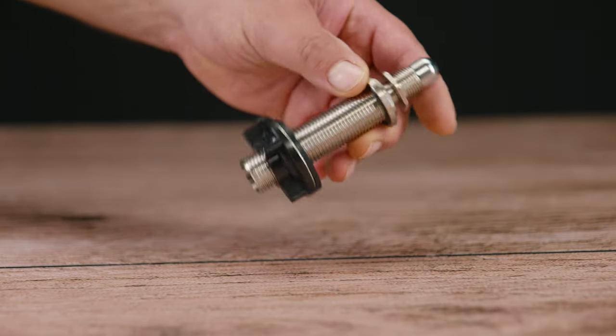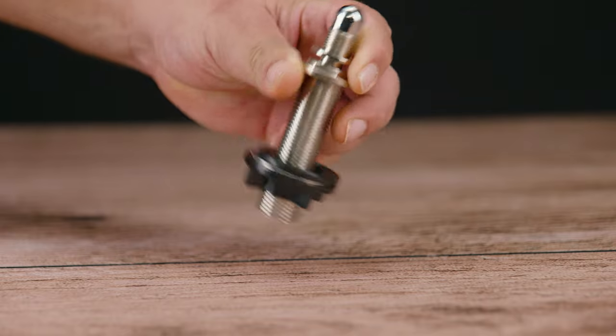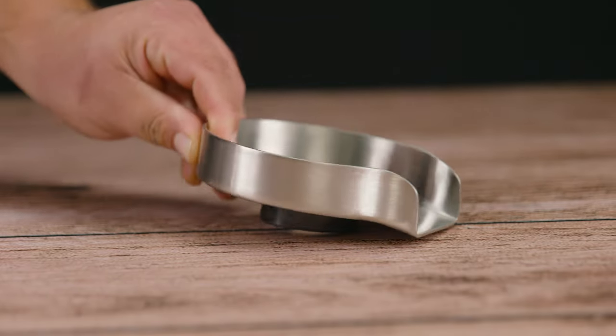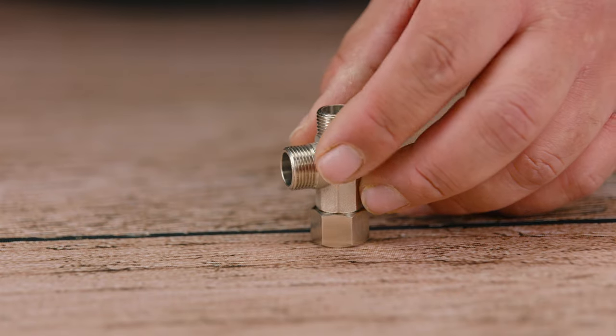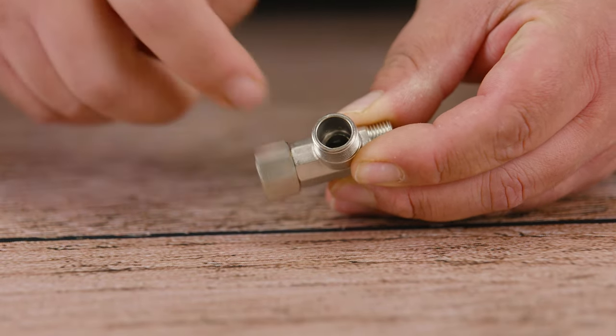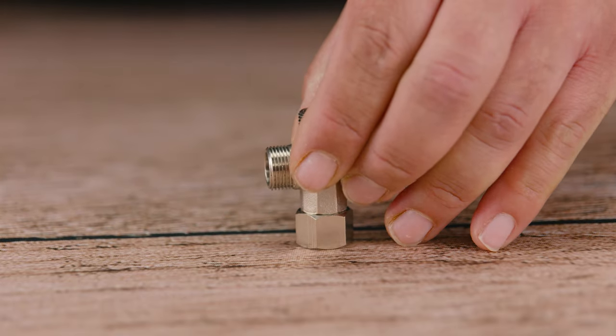In the box, the first thing that we're going to get is our mounting shank. And no, not that kind of shank. Next, we have the glass rinser catcher diverter. Next, we have the T adapter. This is what's going to let you connect the provided hose in the kit to your existing waterline.